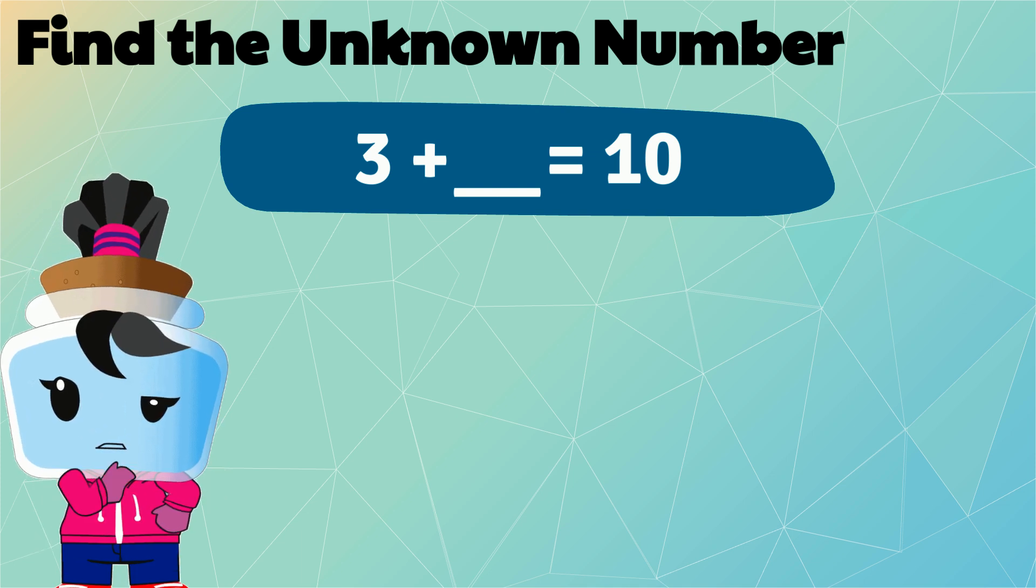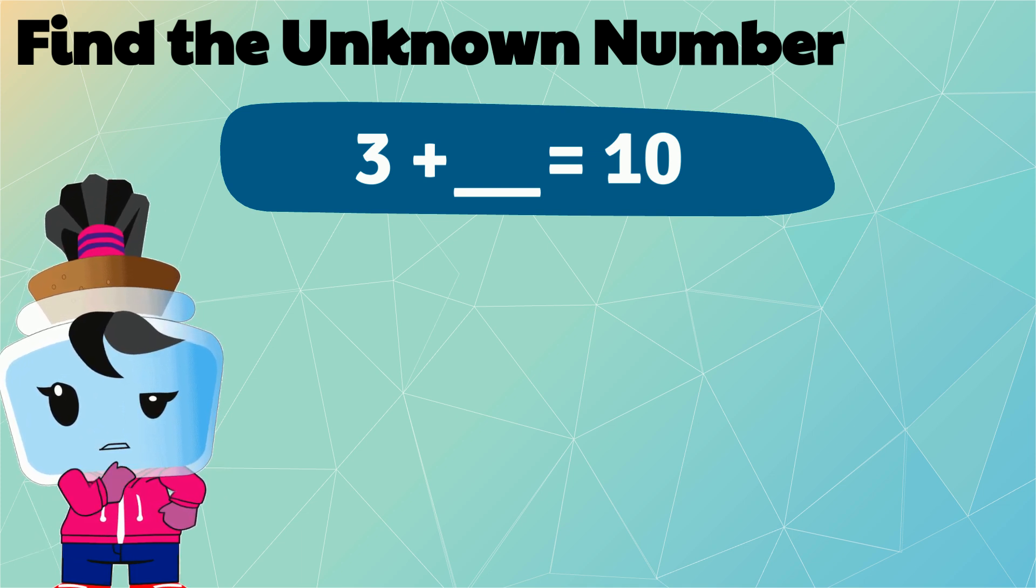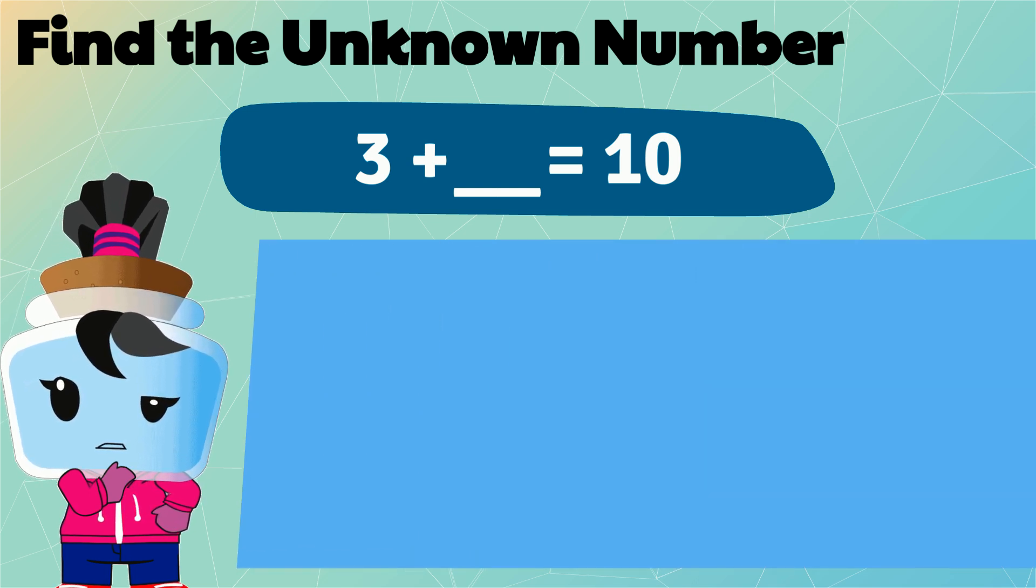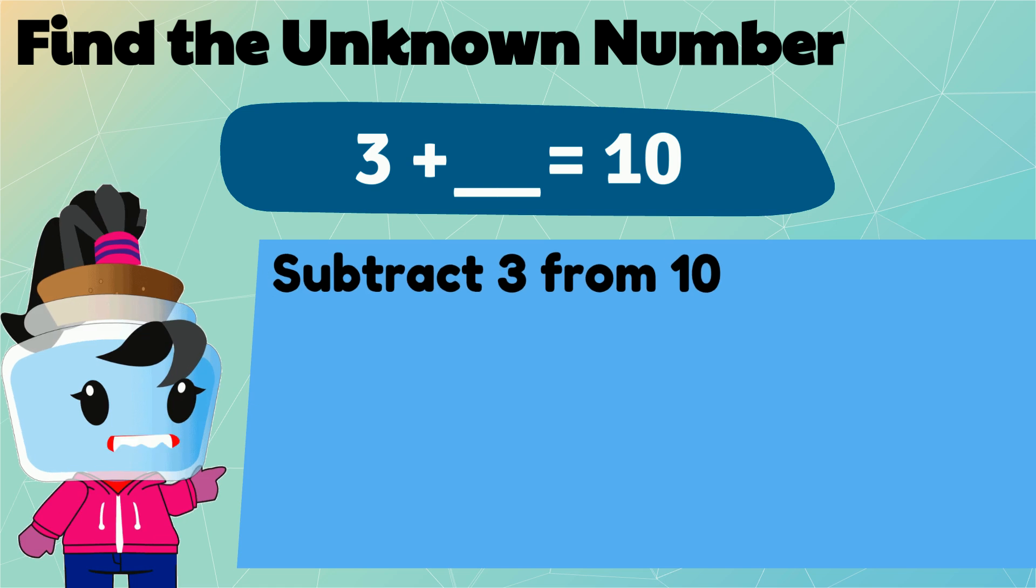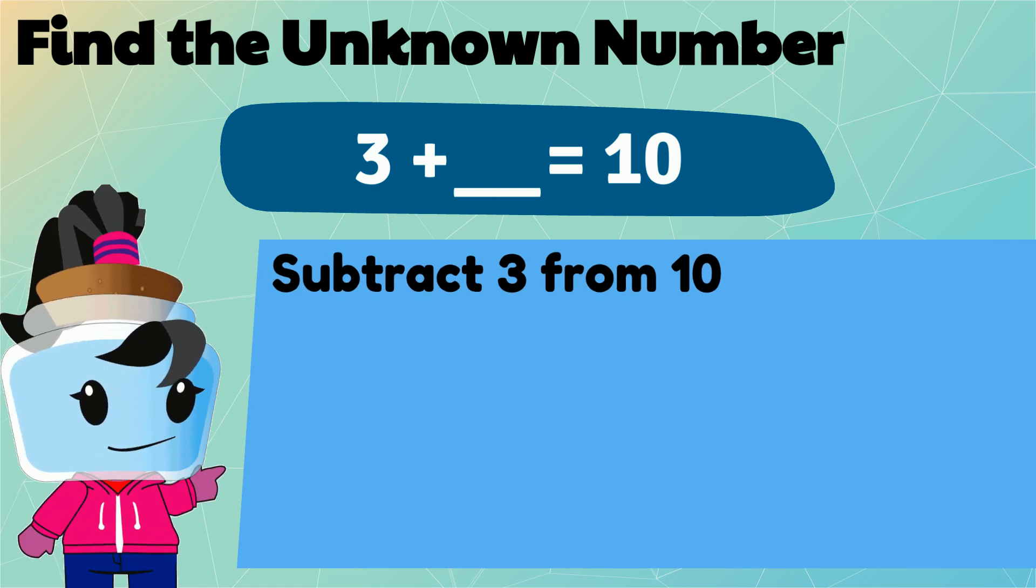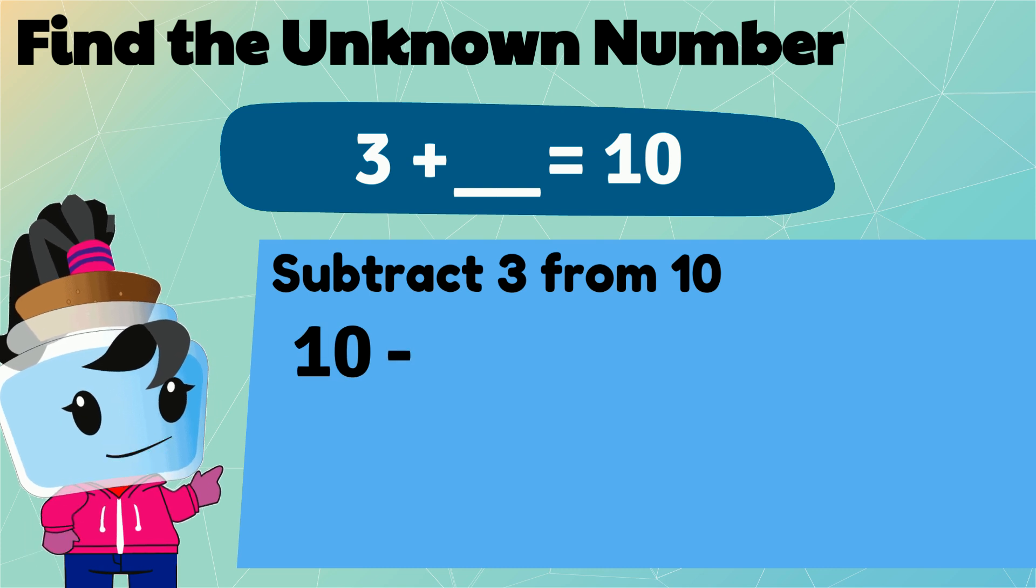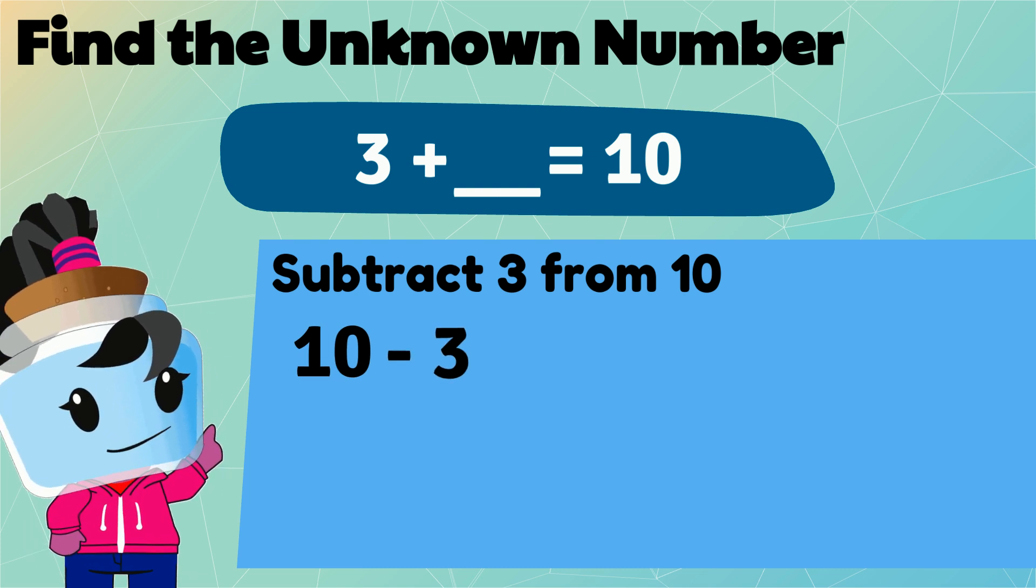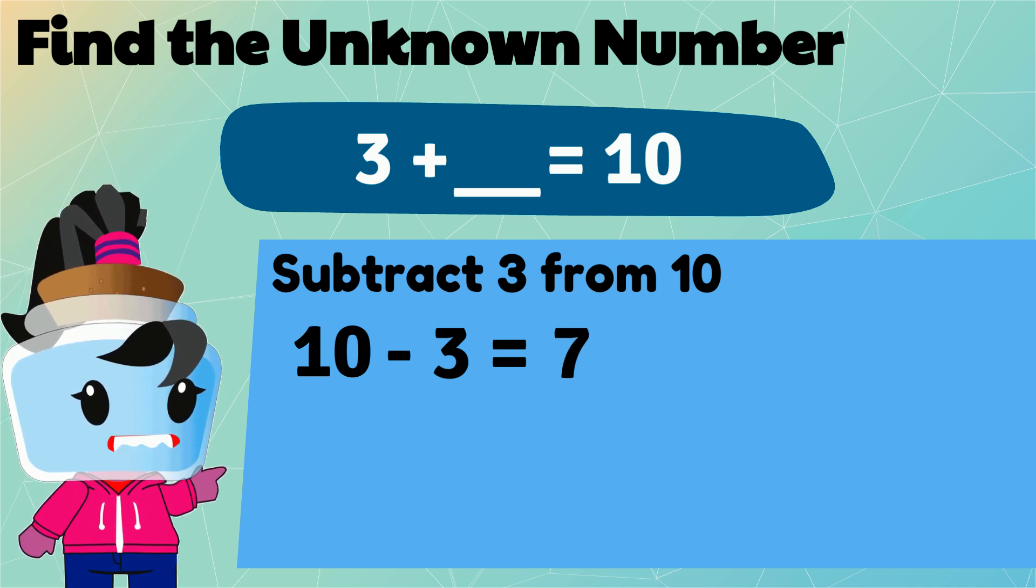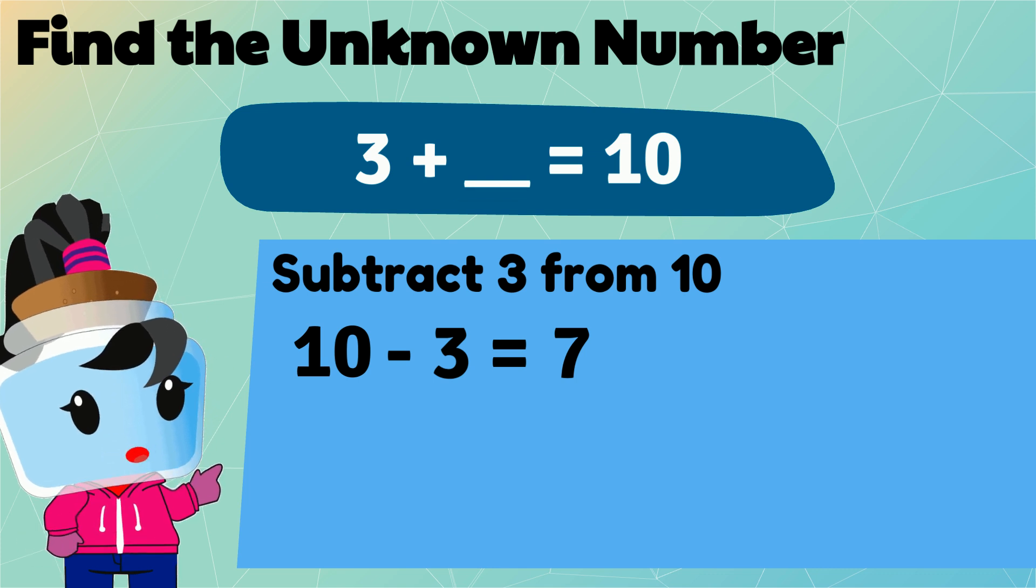Do you have any idea how to find the unknown number? Well, we can subtract 3 from 10 to find out. 10 minus 3 is equal to 7. That means the unknown number is 7.